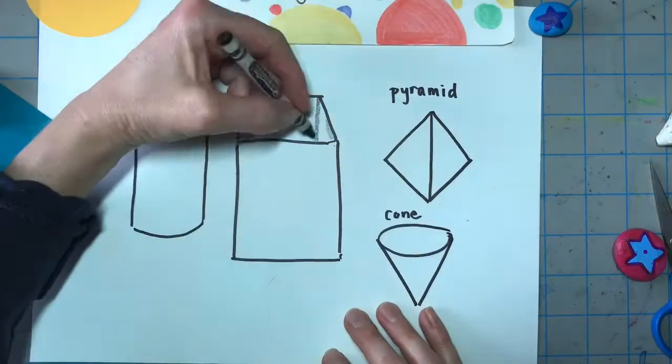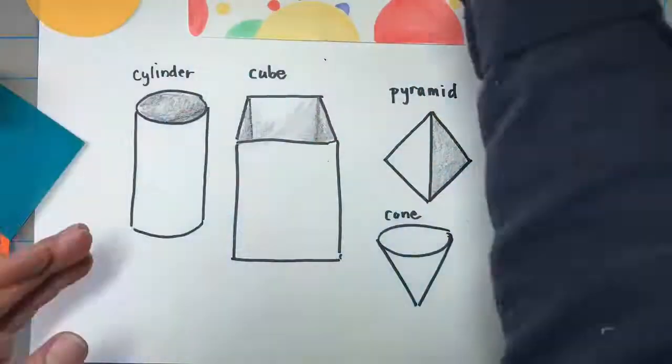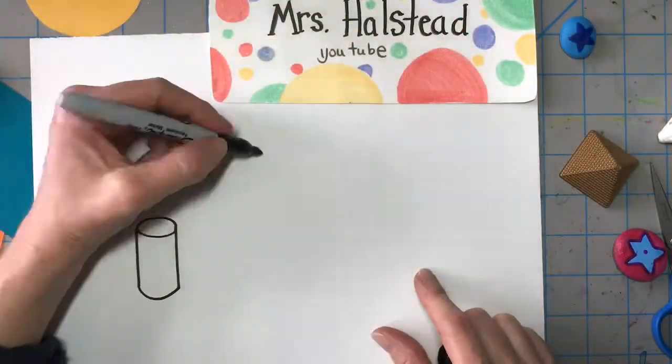Our last step is adding shadows. When you add shadows to your shapes, it helps make them look 3D.